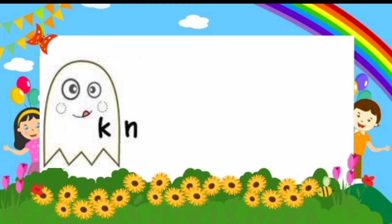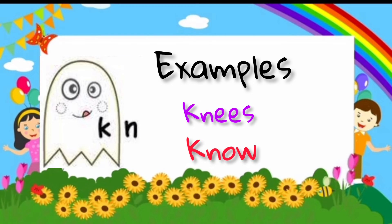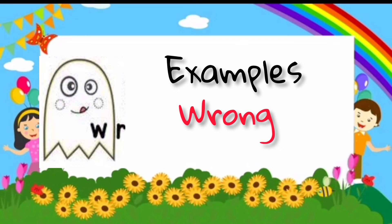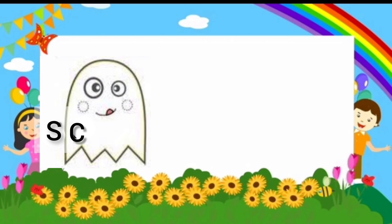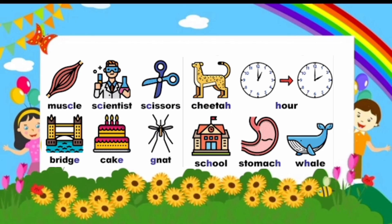Some of the rules are: if K is followed by N, then K will be a silent letter. Examples are 'knees' and 'know.' If W is followed by R, then W will be a silent letter — examples are 'wrong' and 'right.' And if S is followed by C, S will be a silent letter. Examples are 'signs' and 'scene.' Some more silent letters are written here.